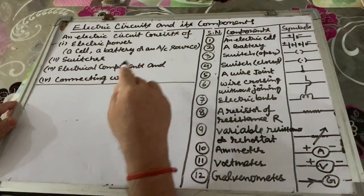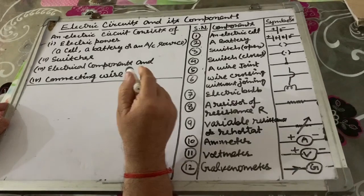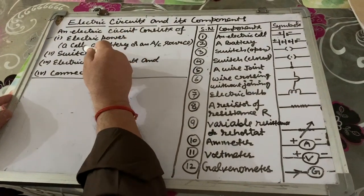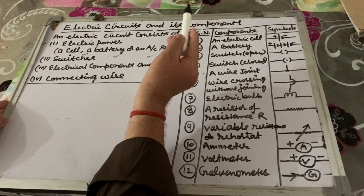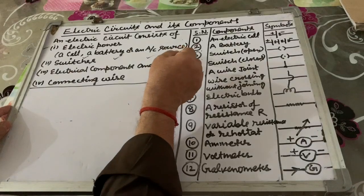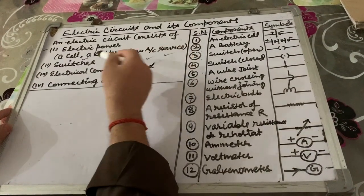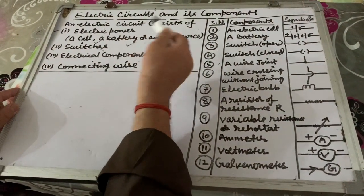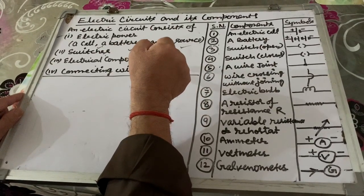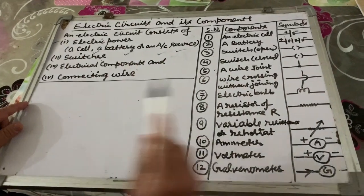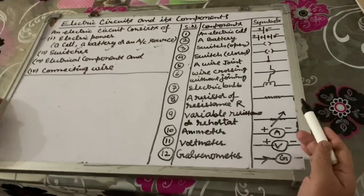Coming to the next topic: electric circuits and their components. An electric circuit consists of electric power, meaning a cell, a battery, or an AC source. Switches are required to complete a circuit. Electrical components are required to complete a circuit. And the fourth is the connecting wire. These are the basic components required to complete an electrical circuit.